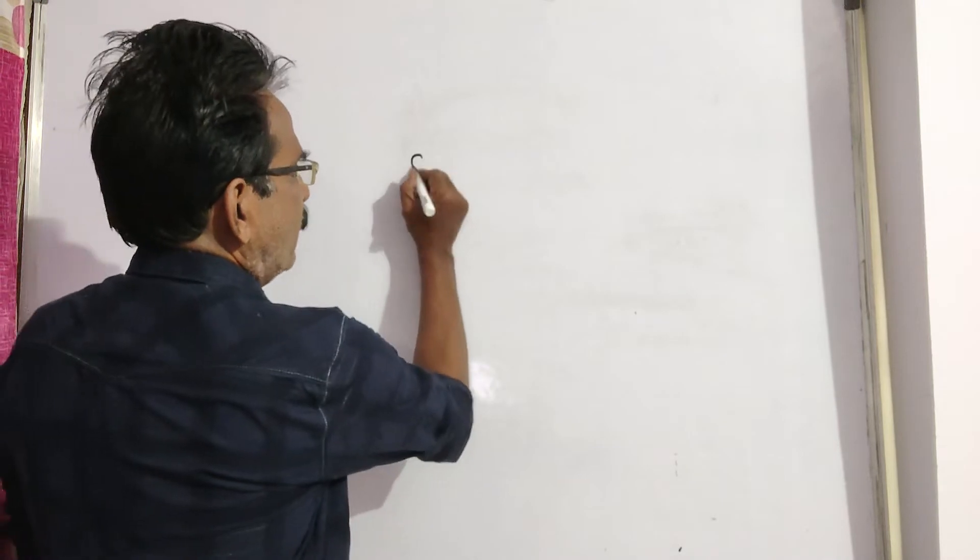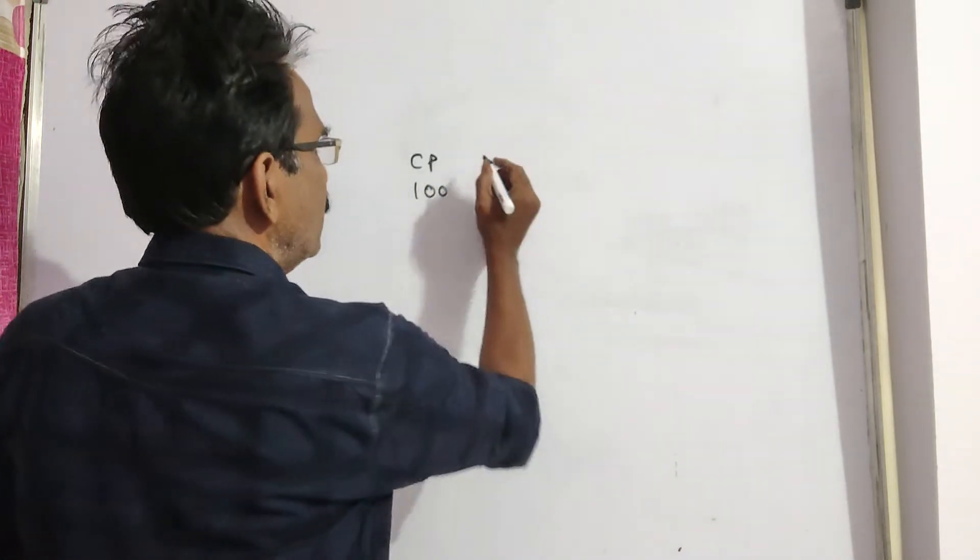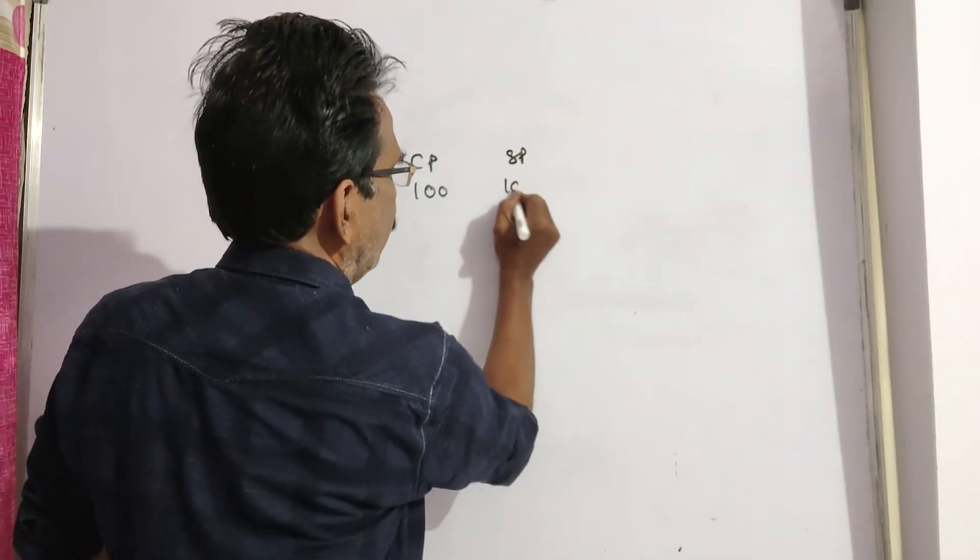See friends, a man sells an article at a profit of 40%. That means if cost price is 100, then the sold price will be 140.